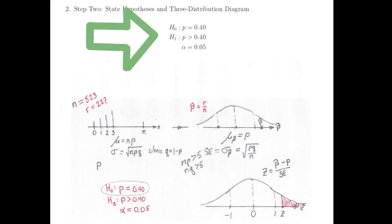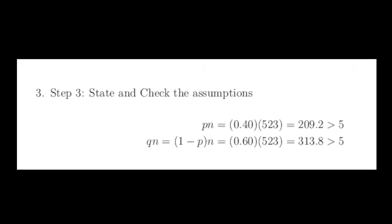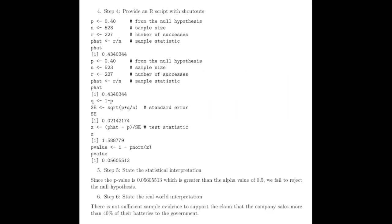In step 2, we state the hypotheses, and we show the three-distribution diagram that's the roadmap for doing our calculations. In step 3, we state and check our assumptions. In step 4, we provide our client with the R script.